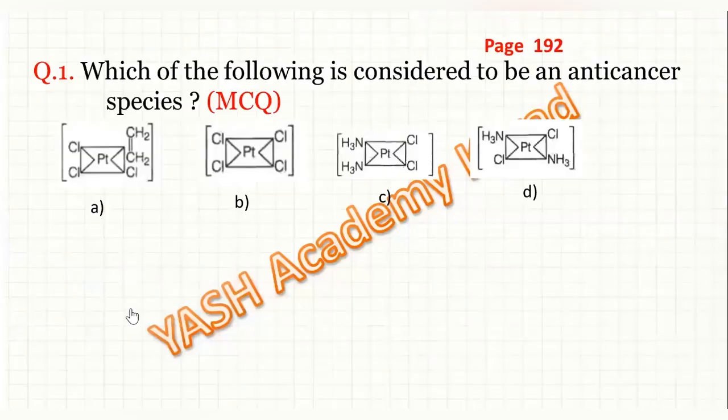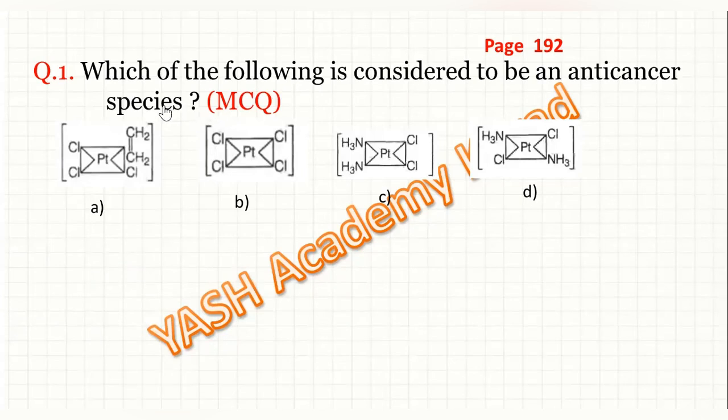Page number 192. Which of the following is considered to be an anti-cancer species? Correct option is C, that is the cisplatin.